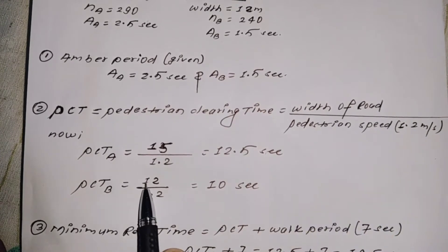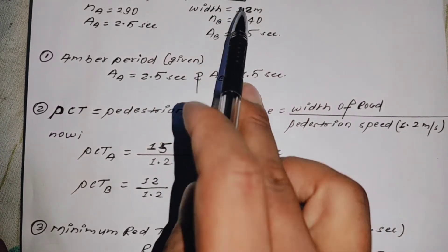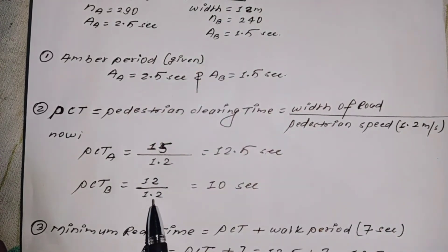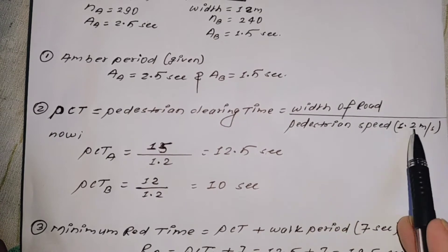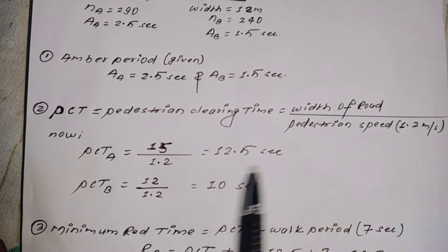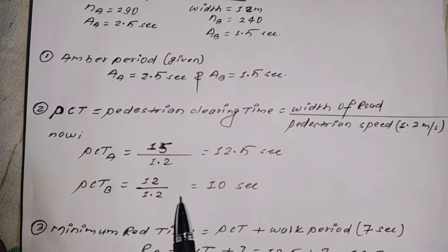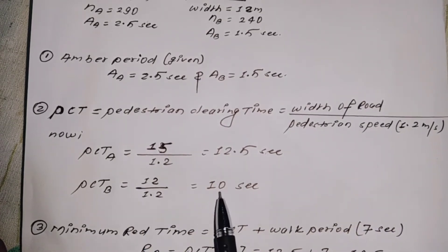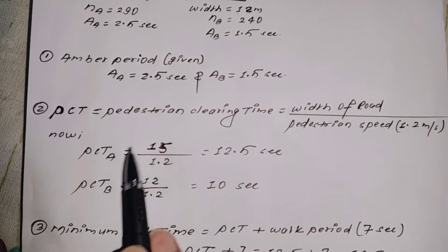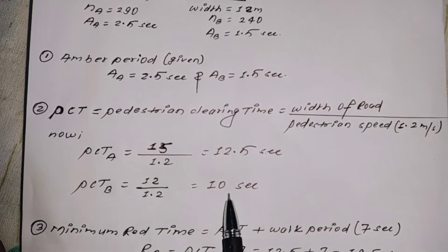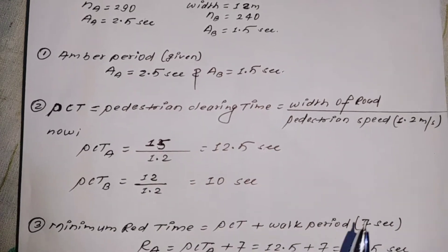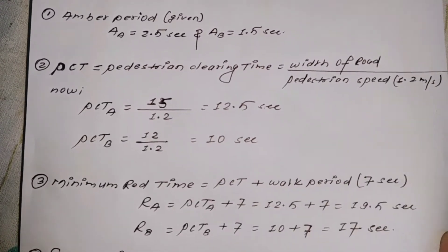For Road B, width is 12 meters and pedestrian speed is 1.2 meters per second. So PCT for Road B = 12 divided by 1.2 = 10 seconds.